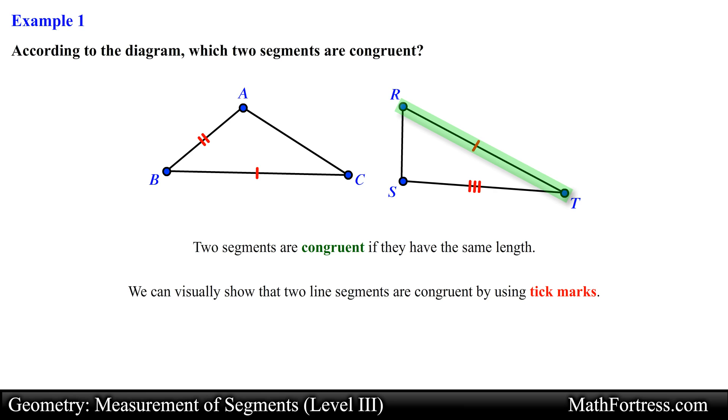In the second triangle, segment RT has a single tick mark and segment ST has a triple tick mark. Segments that have matching tick marks are congruent, so segment BC is congruent to segment RT and this is our final answer.